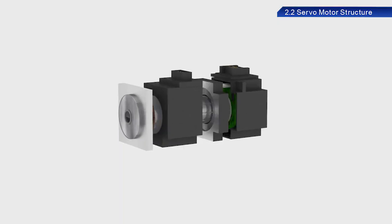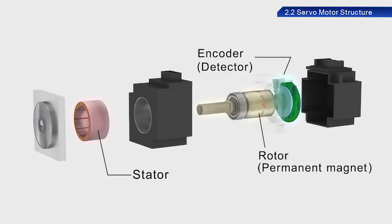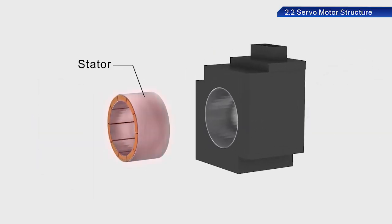Now let's take a look at the structure of servo motors. I will discuss the structure of rotary servo motors in this training. Rotary servo motors are primarily configured with a stator, rotor, and encoder. The stator is the foundation